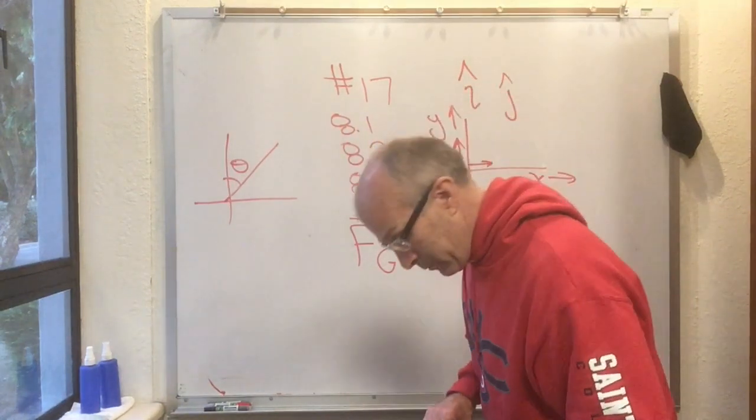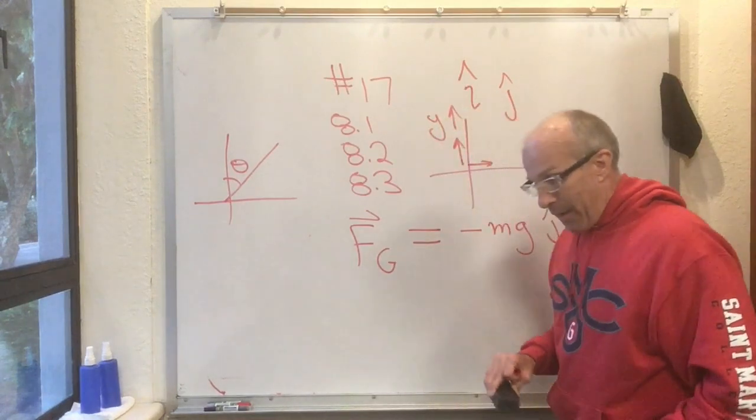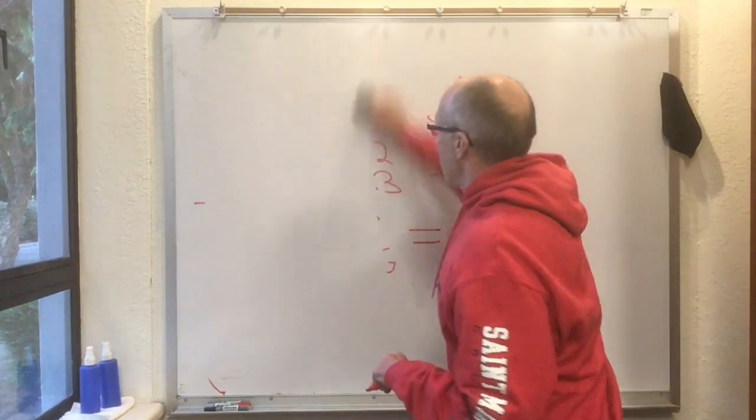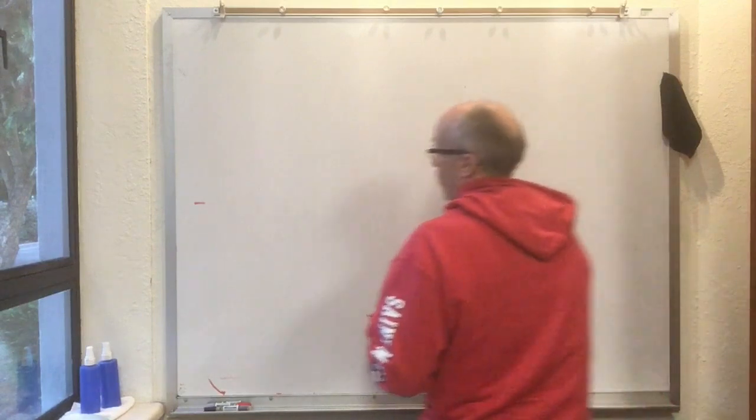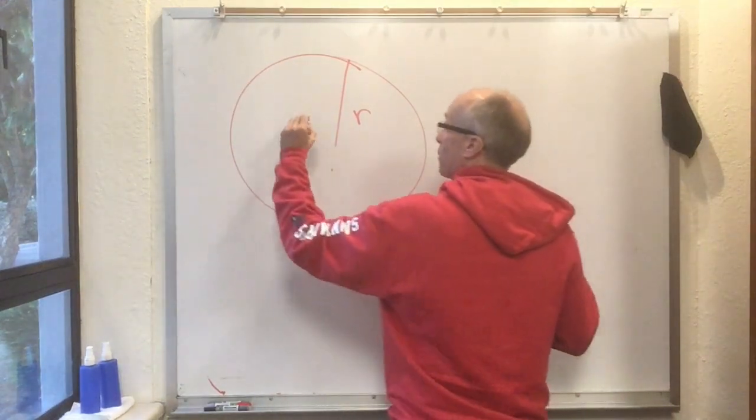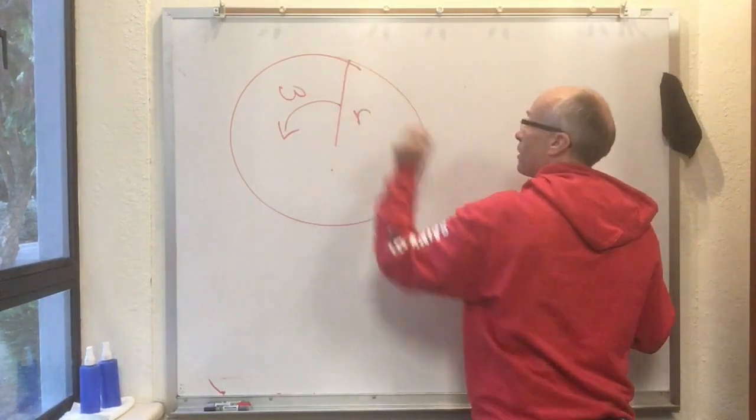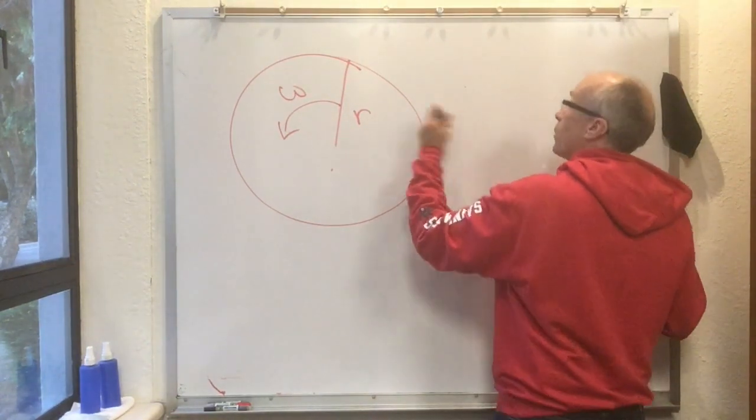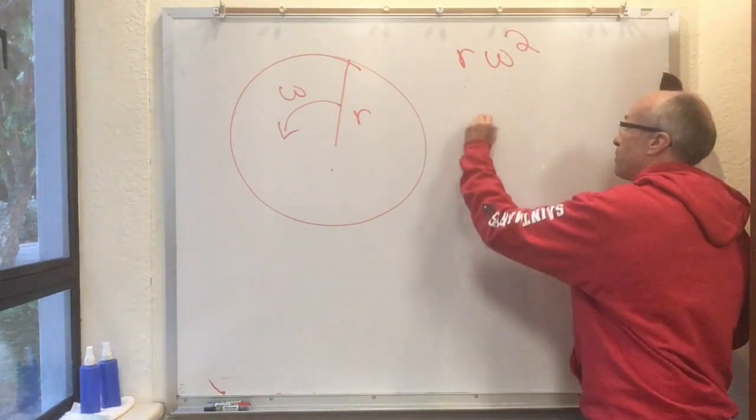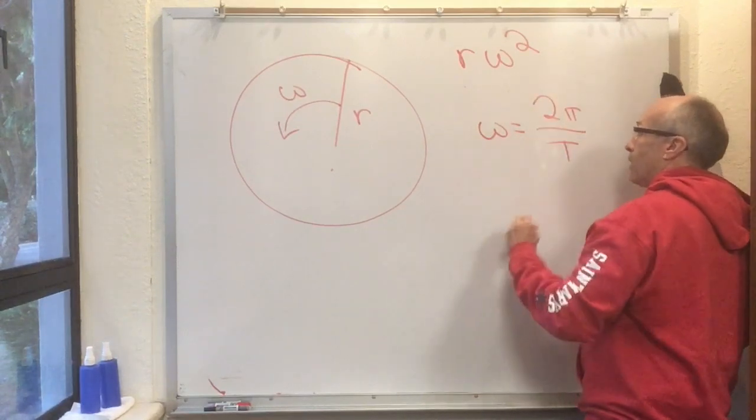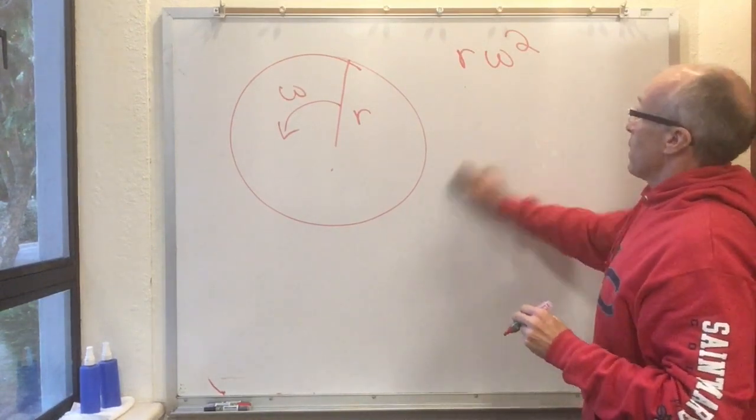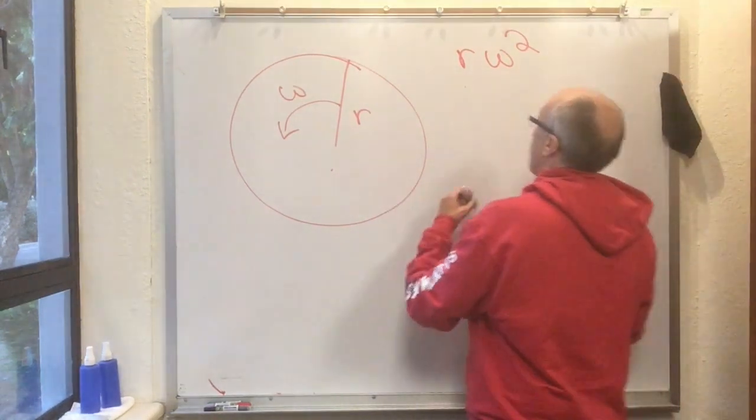Now we'll go on to section 8.2, which is a fancier way of thinking about uniform circular motion. In uniform circular motion, you know we have a force pointing toward the center that keeps the thing going in a circle with angular frequency omega. We know this acceleration's magnitude is r omega squared, where omega is the angular frequency. Omega is also 2π over T, and also 2π times the ordinary frequency. It's r omega squared, and it always points inward.